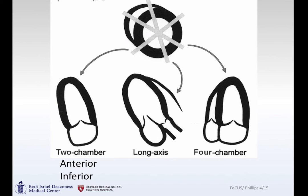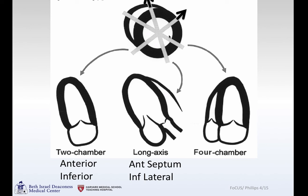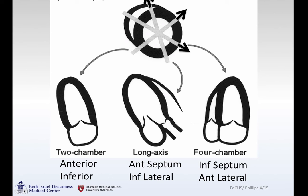To review: the two-chamber view shows the anterior and inferior walls with the marker pointing up. The apical three-chamber view has the anterior septum and inferior lateral wall. The apical four-chamber view has the inferior septum and anterior lateral wall, with the marker pointing down towards the axilla. And as a reminder, the anterior septum contains the aorta.